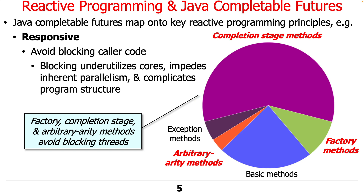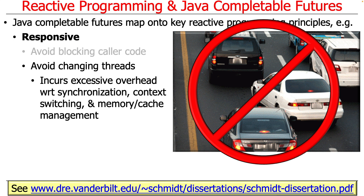There's also an important assumption to be aware of: reactive programming assumes that creating threads is expensive, and therefore you want to limit the number of threads. You typically do that by having a pool of them, like the common fork-join pool, but not limited to that. Another goal is to avoid changing between thread contexts, because a pipeline of threads passing things back and forth can result in too much context switching overhead, too much synchronization overhead, and too much memory and cache management overhead.